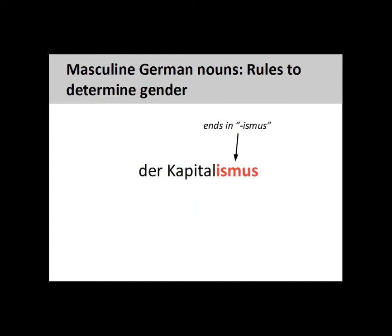Nouns ending in -ISMUS, such as 'Kapitalismus' (capitalism), are masculine.